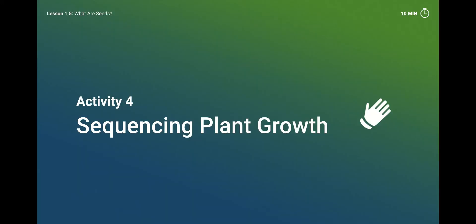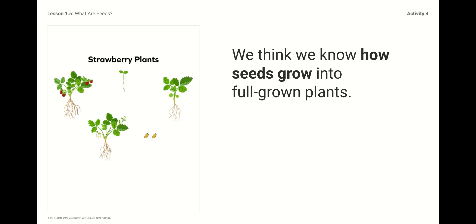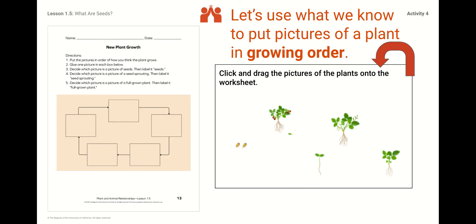The last activity is sequencing plant growth. Sequencing means putting something in order — I just wanted to remind you what sequencing means. Here is a picture of a strawberry plant. We think we know how seeds grow into full-grown plants, so we're going to show what we know on the next slide. You're going to use these small pictures and click and drag them onto worksheet page 13, into these boxes. What do you think went first? What do you think went next? How does this cycle look? Let's use what we know to put the pictures of the plants in growing order.